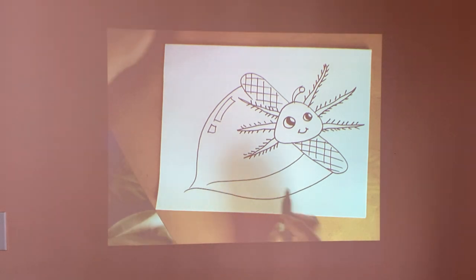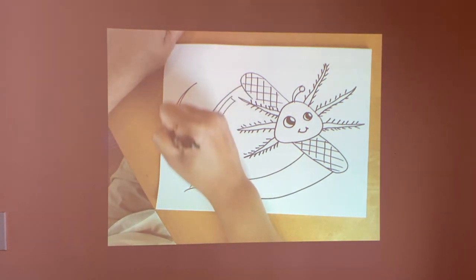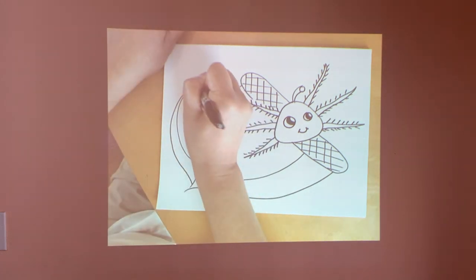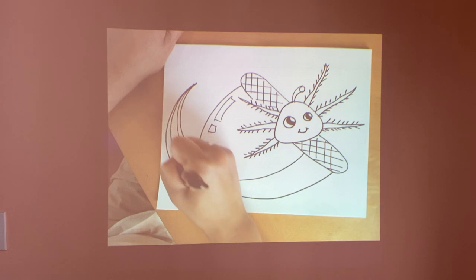The last thing we'll need to draw will be the axolotl's tail. So if you don't have enough room like me, try your best. So draw sort of a pointy curved line like this. Then add another layer and another layer like this.